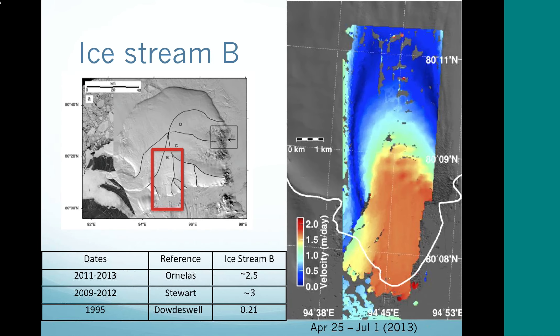This is our data. We're looking at Ice Stream B on the southern side of the ice cap. This white line divides the land on one side and the water on the other. We found a maximum velocity of about 2.5 meters per day on this specific ice stream. Comparing to overlapping data, it's about three — fairly similar and consistent. The 1995 data is a little hard to compare because it does not go all the way to the front of the glaciers, and the fronts are important because this is where we see the higher velocities. In 1995, they found a movement of about 2.21 meters per day, and we're looking at about 2.5 meters per day — a pretty significant increase.